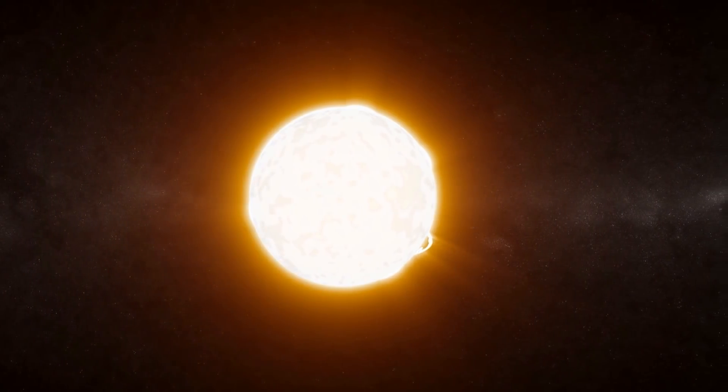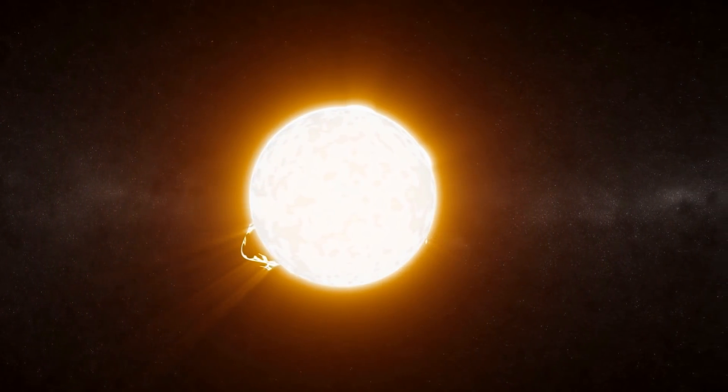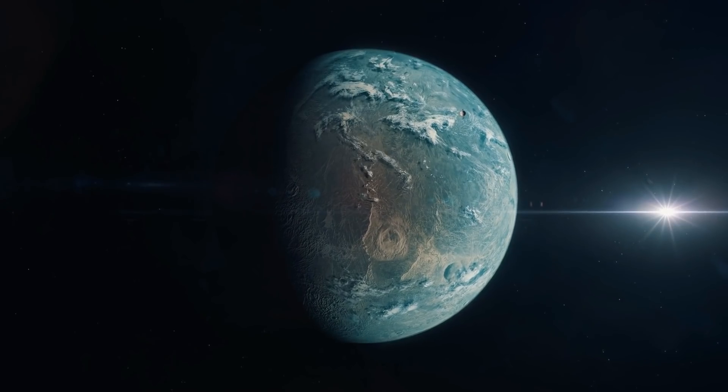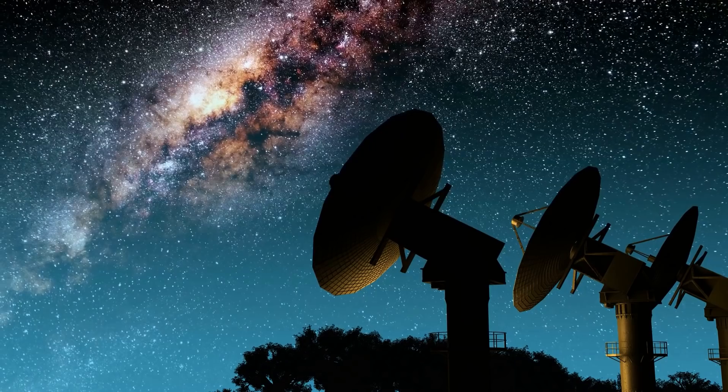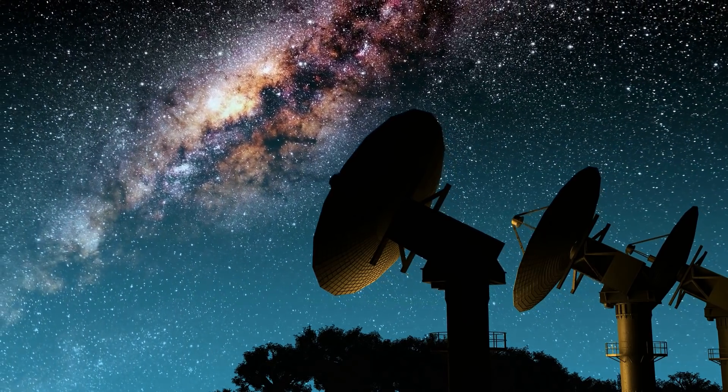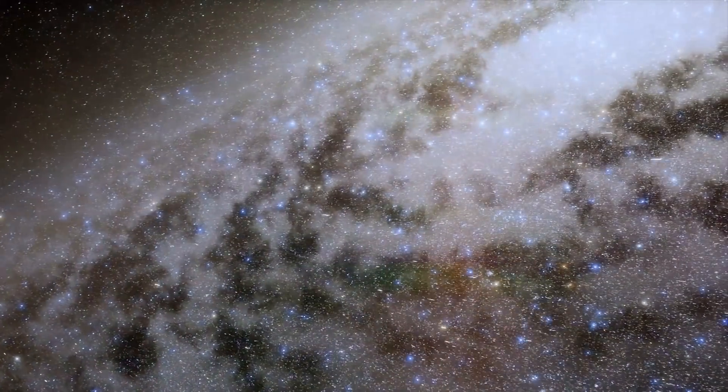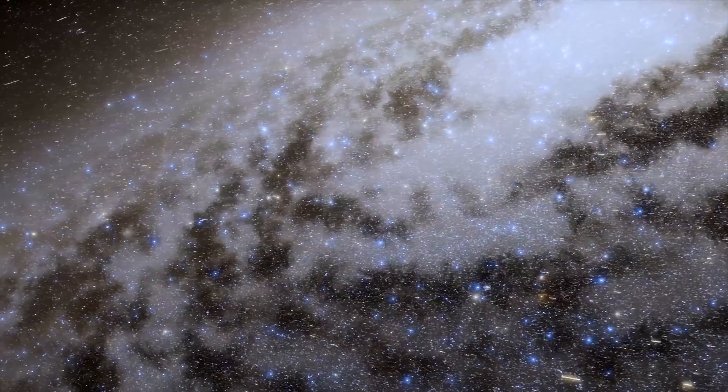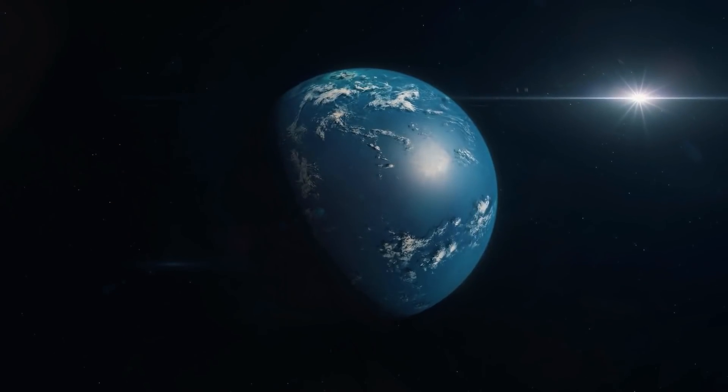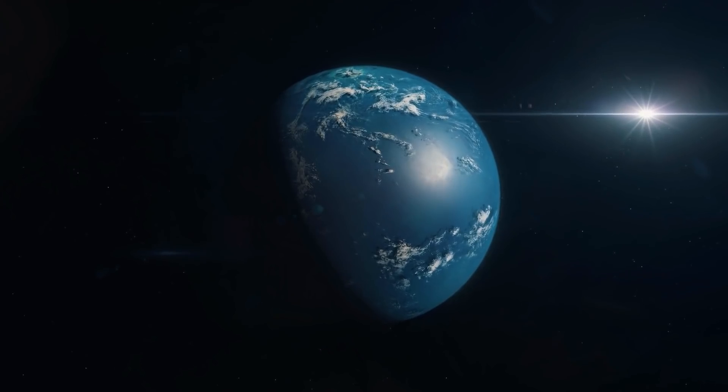The star Gliese 667C is orbited by further exoplanets, and some of these others could also be habitable. At present, the observations around Gliese 667C and other exoplanets are actively continuing. We can be truly curious when the first research team will provide definitive proof of life beyond Earth.